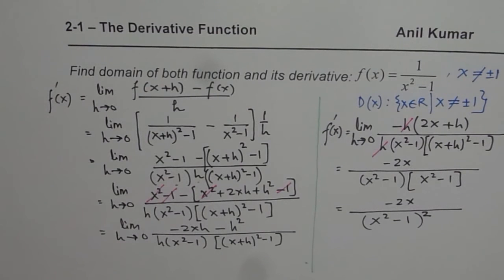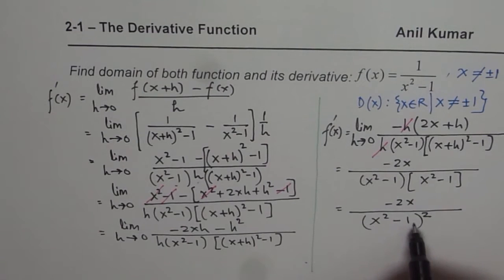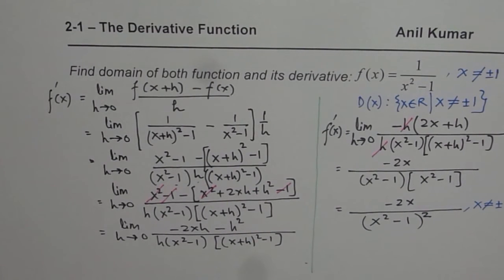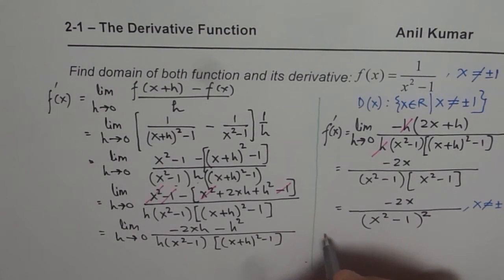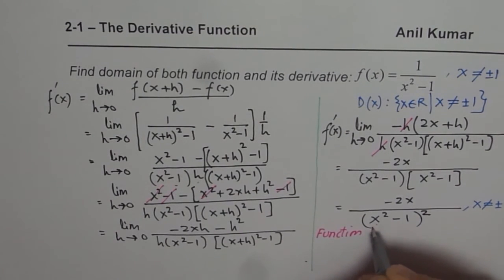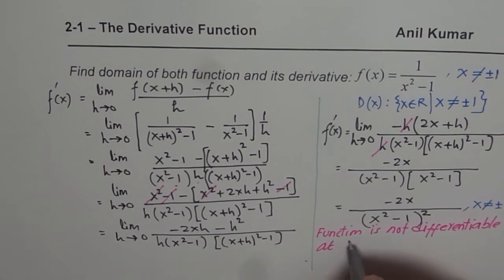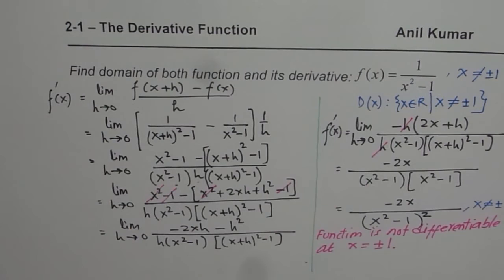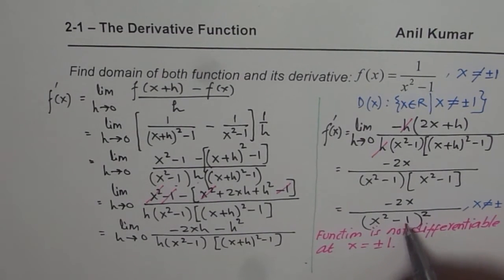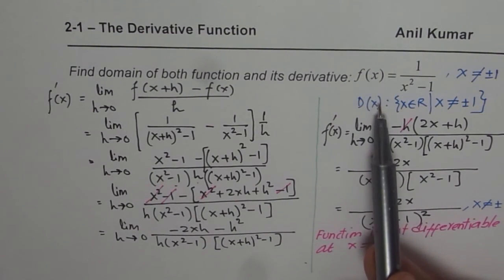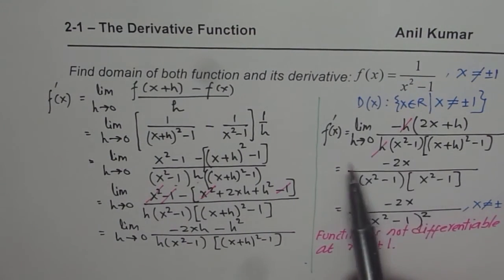Now, what is the domain of this derivative? The derivative -2x/(x² - 1)² is undefined when x = ±1, since that makes the denominator zero. So the function is not differentiable at x = ±1, since f'(x) is not defined there. In this particular case, the domain of the derivative is the same as the domain of the function.